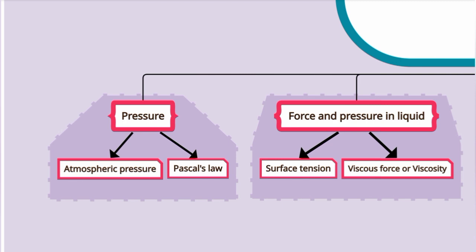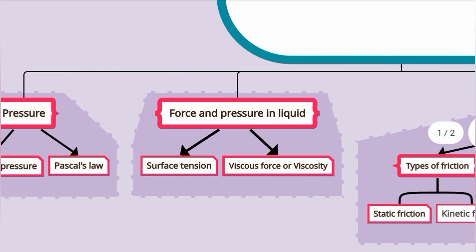The definition of surface tension and then its unit. Viscous force is measured by the unit called poise. Viscous force, or viscosity, opposes the relative motion of the layer. The property of liquid is viscosity.